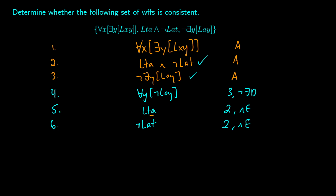Looking at what we have: Lta and not Lat. To close this branch we need to derive either 'not Lta' or 'Lat'. The universal in line 4 doesn't directly give us Lat or not Lta right now, so let's leave line 4 for a moment and focus on line 1.